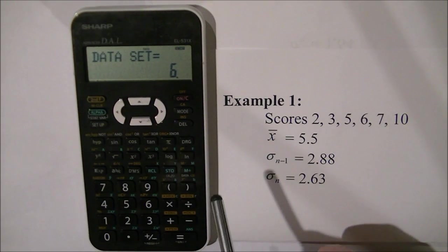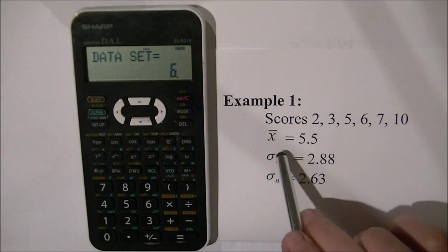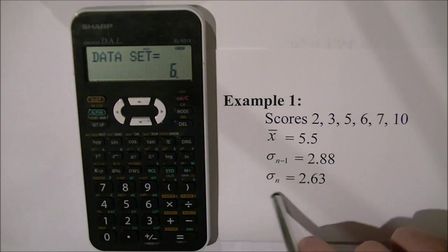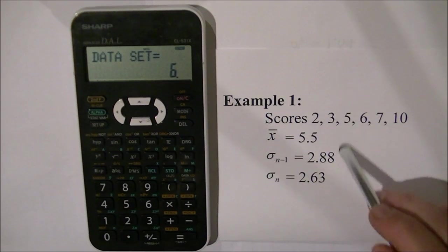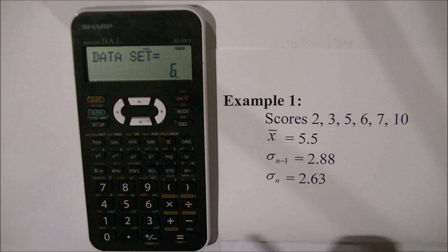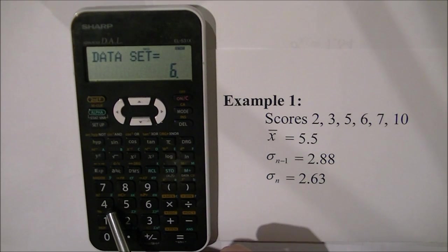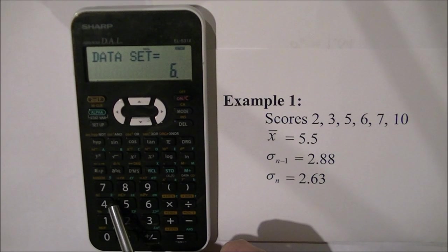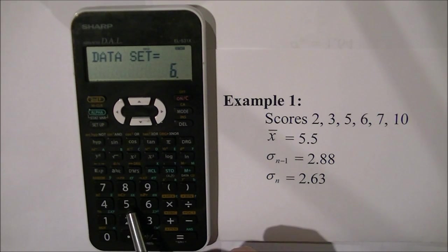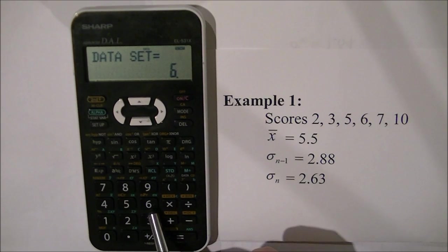Now I'm going to find the mean, the sample deviation, and the standard deviation of the population. Above the 4 key in green I see x̄ which is the mean. Above the 5 key I see Sx which is the sample deviation, and above the 6 I see the population deviation.